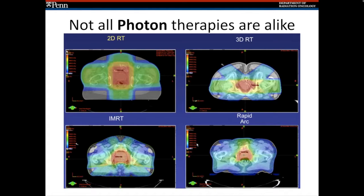In the late nineties and two thousands, the development of intensity modulated radiotherapy — the ability to, through each beam angle, modify beamlets within each port that we treat — allowed us to develop even more conformal treatments.